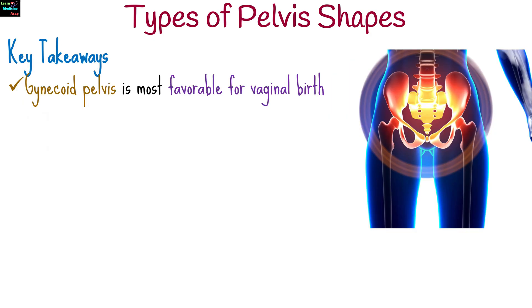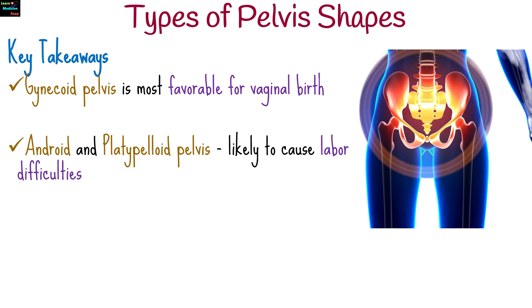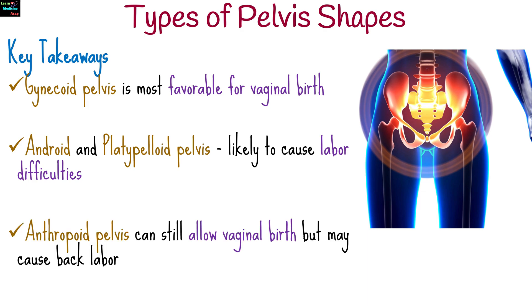The key takeaways from this video are that the gynecoid pelvis is the most ideal for vaginal birth. Android and platypelloid pelvises can make labor more difficult, often requiring medical interventions. An anthropoid pelvis allows vaginal delivery, but may lead to back labor.